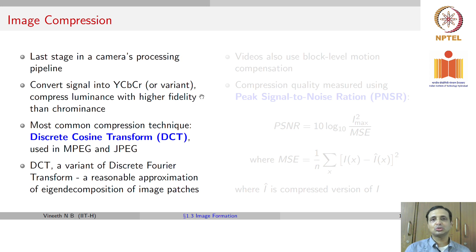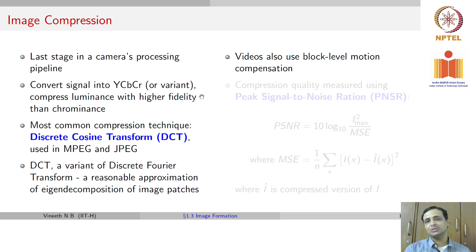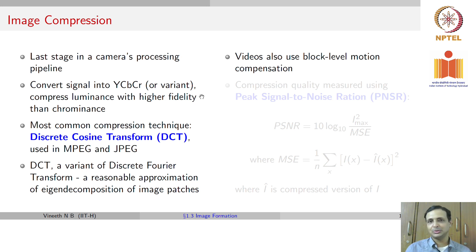The most common compression technique used to store an image is the Discrete Cosine Transform (DCT), which is popularly used in standards such as MPEG and JPEG. DCT is a variant of the Discrete Fourier Transform and can be considered a reasonable approximation of an eigen decomposition of image patches. For videos, DCT is used alongside what is known as block-level motion compensation. You divide video into frames and sets of frames into blocks, then store certain frames based on motion compensation concepts. This is used in the MPEG standard, which divides frames into I frames, P frames, and B frames, and uses strategies to decide how each frame should be coded.